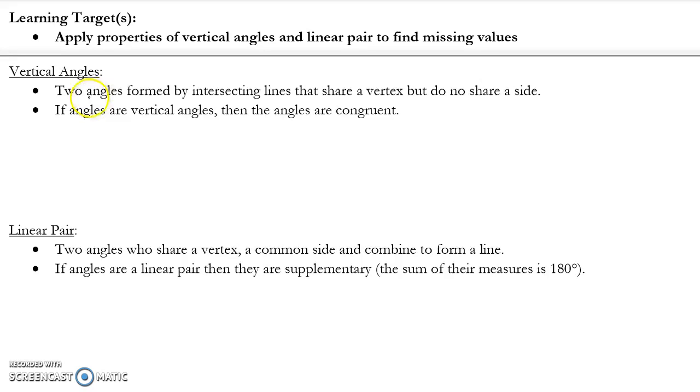First, let's review vertical angles. Two angles formed by intersecting lines that share a vertex but do not share a side. These are intersecting lines. Here's my vertex. My vertical angles would be these two angles, angle 1 and angle 2. If angles are vertical angles, then they are congruent. So I know that angle 1 is congruent to angle 2 because they are vertical angles.